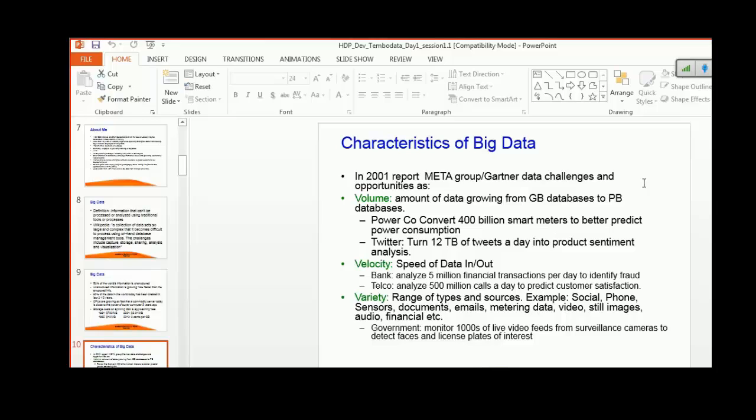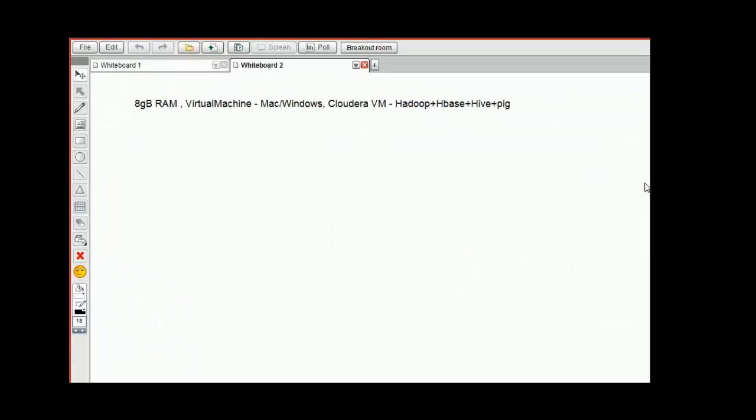First is volume. This refers to the size of data you're dealing with, from megabytes to gigabytes, gigabytes to petabytes. Power companies convert 400 billion smart meters to better predict power consumption. Twitter turns 12 terabytes of tweets a day into product sentiment analysis. Sentiment analysis is basically when a brand has presence on Twitter or Facebook and people talk about their brands or products.